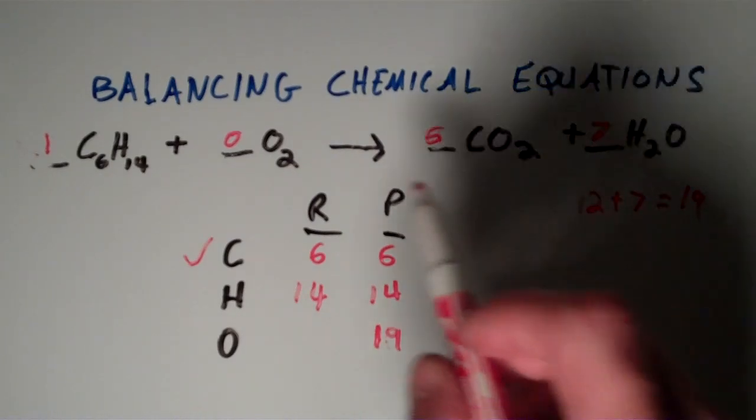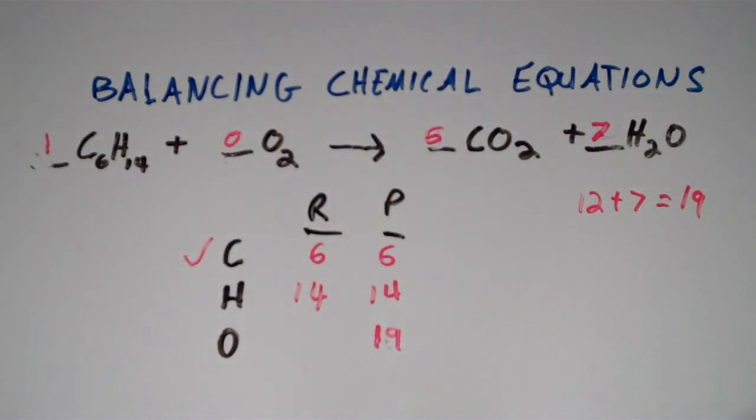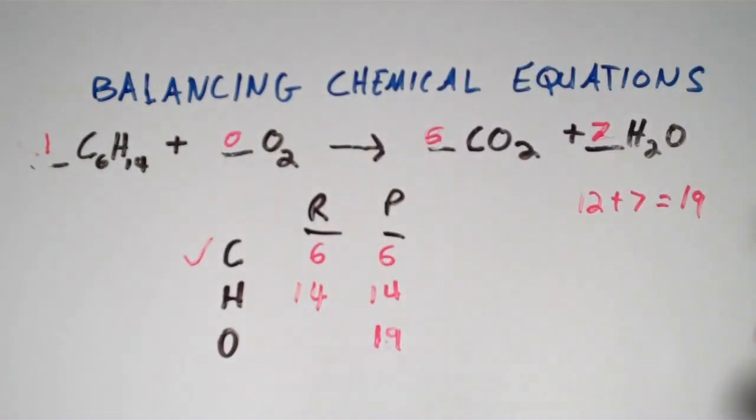So we have 19 over here, we have zero over here, and there's two oxygens for every O2 molecule. So that means we're going to have to multiply two by something to get 19.